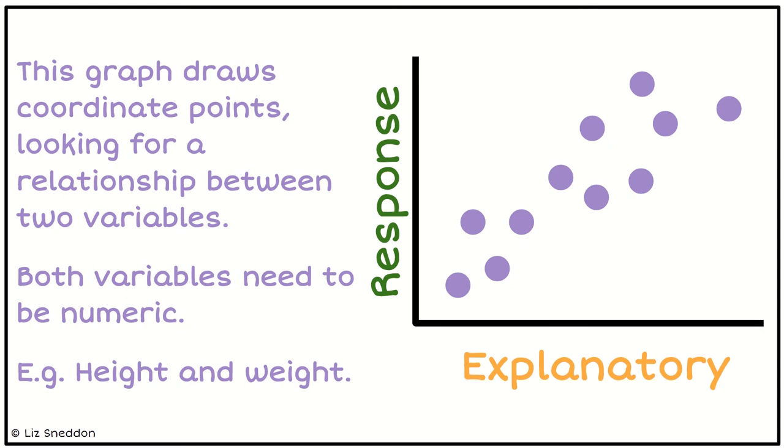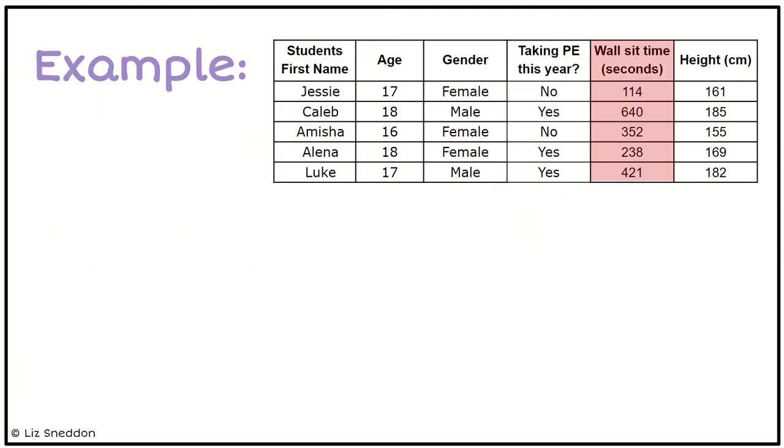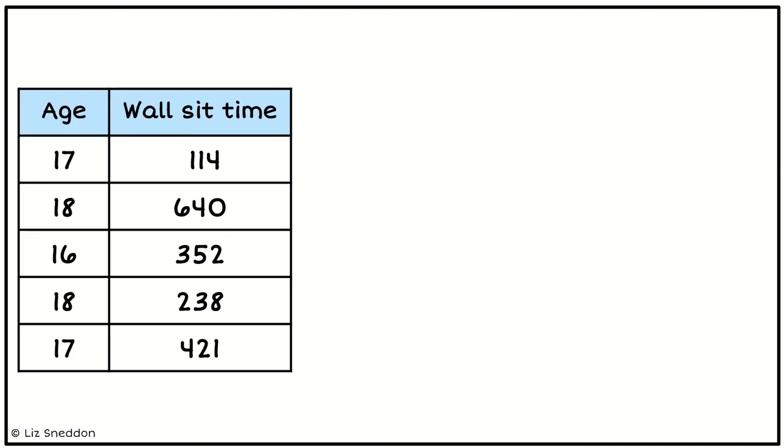Let's have a look at an example of how to do that. If we take our wall sit time and we also add our age, I have chosen two numeric variables: age and wall sit time. Now let's draw a scatter graph of that. Here are just those two variables.